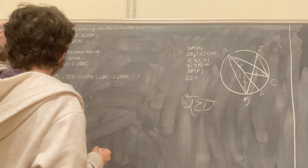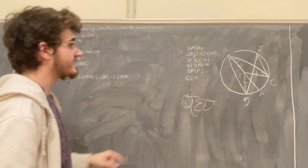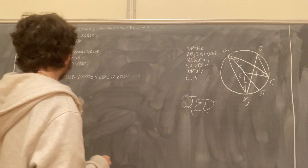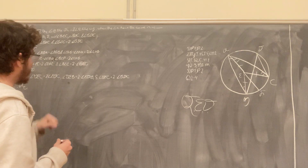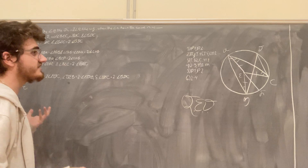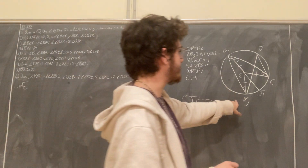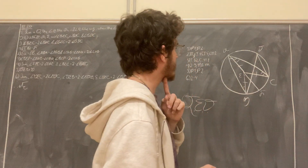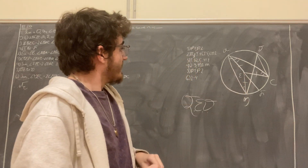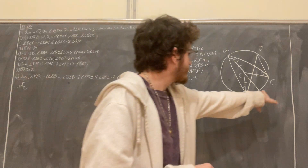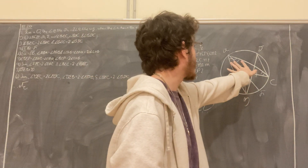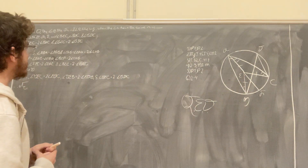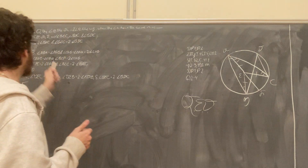And if we add these two together — so if we add B, E, F and F, E, C — that gives us the whole angle B, E, C. Now B, E, F is double the angle E, A, B, and the angle F, E, C is double the angle E, A, C. So when we add these two angles together, we get double the sum of E, A, B and E, A, C, which is just the angle B, A, C. Therefore angle B, E, C is double the angle B, A, C. This is the first part of our proof done.